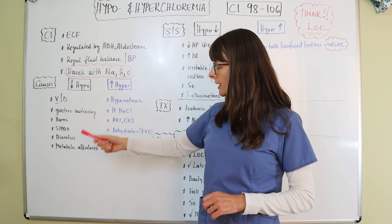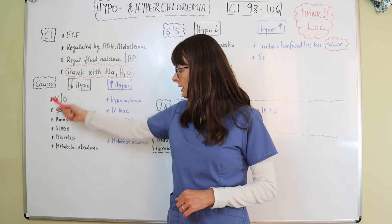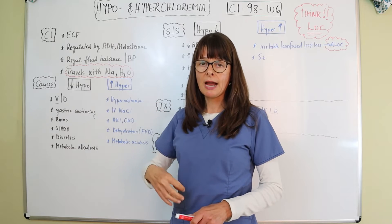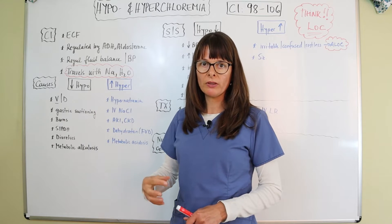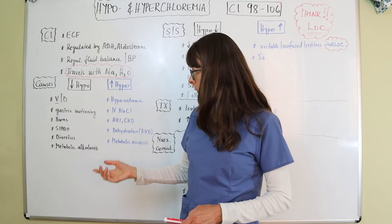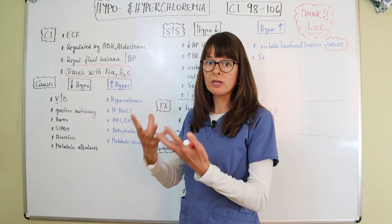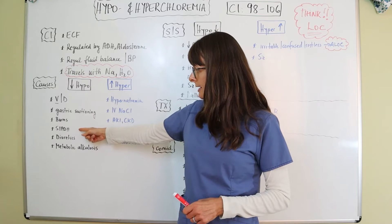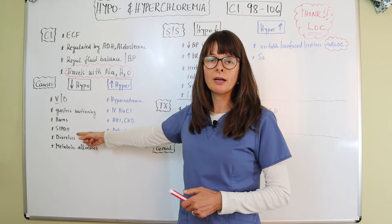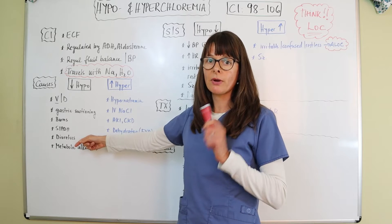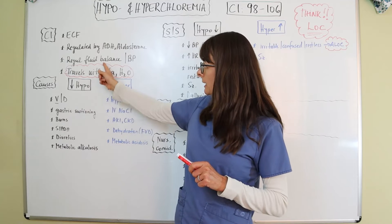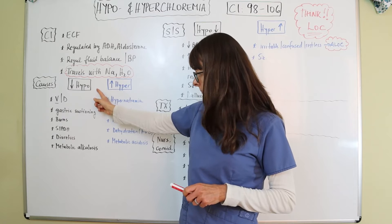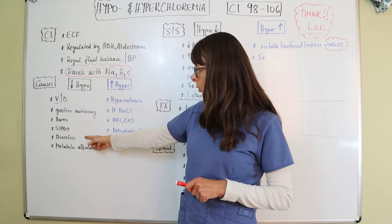Causes for hypochloremia can be vomiting or diarrhea, and that is mostly vomiting. If you're losing a lot of stomach contents, hydrochloric acid will go with it, so you'll lose a lot of chloride that way. Also gastric suctioning for the same reasons — we're getting rid of some of those acids. Burn injuries, as well as SIADH, which is syndrome of inappropriate antidiuretic hormone. If there's a problem with the ADH that regulates our chloride, it can cause hypochloremia. Also diuretics might affect our chloride levels.